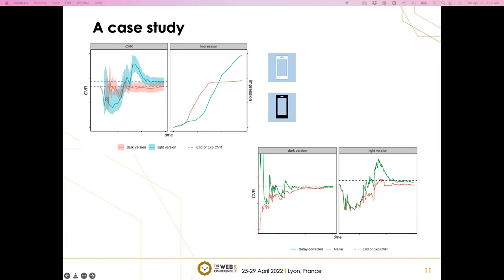In the bottom panel, we compute what the naive CVR would have been and compare it to the delay corrected CVR. The red line indicates the naive one. What you can see is that our delay corrected CVR is much closer to the end of the experiment CVR, that's what we want. Where the red one, in some cases, still has some gap even at the end of the experiments.